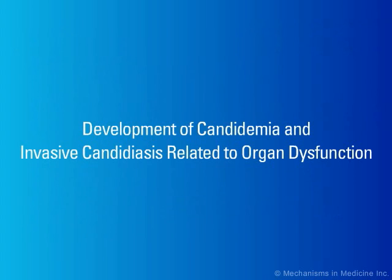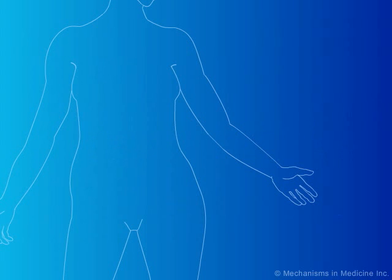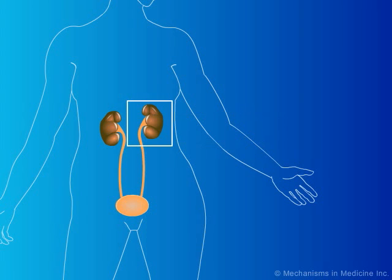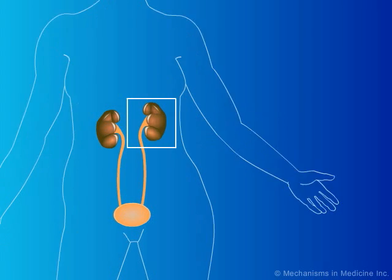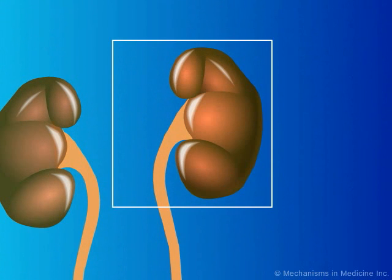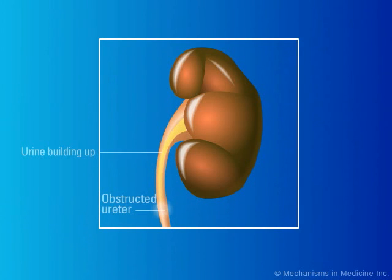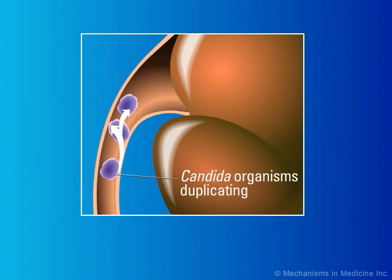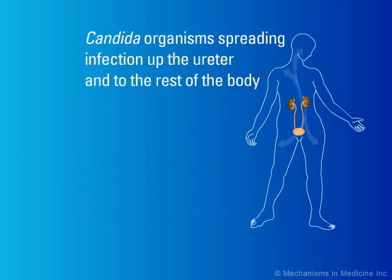Similarly, organ dysfunction such as obstruction of the urinary tract may also lead to candidemia and invasive candidiasis. Envision the normal drainage of the kidney through the ureters into the bladder. Due to the normal flushing of urine, organisms do not proliferate in the kidney nor in the ureter. However, should a ureter become obstructed, microorganisms which usually should be cleared with the normal flushing mechanism of the genitourinary tract may become trapped and proliferate due to stasis of urine. Candida organisms duplicating in the urine in the obstructed ureter may then invade the kidney, and subsequently, invasion of the bloodstream may ensue with dissemination of the organisms throughout the body.